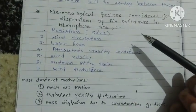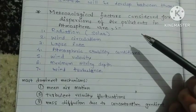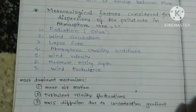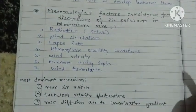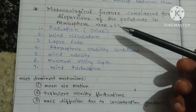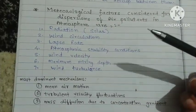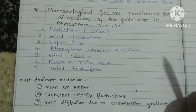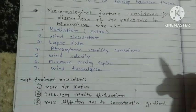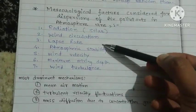There are a total of seven factors that affect the dispersion of air pollutants in the atmosphere. The first one is solar radiation. The second is wind circulation — how the wind is circulated and what will be the direction of the wind.